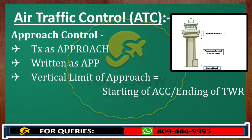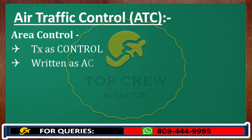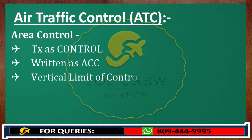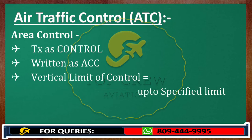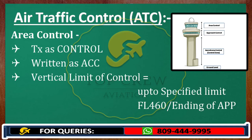Now let's discuss area control, to be transmitted as 'control' and written as ACC. The vertical limit of control starts at the ending point of approach — we cannot create a gap, because we have to give instructions to pilots at all times. So the ending point of approach is the starting point of Area Control Center, up to a specified limit. If there is no upper limit mentioned, then we assume that the control limit is up to flight level 4-6-0.